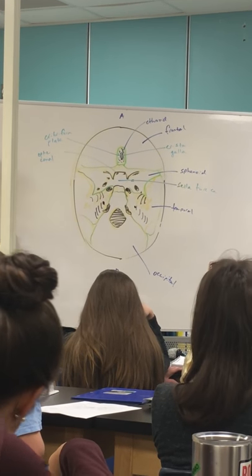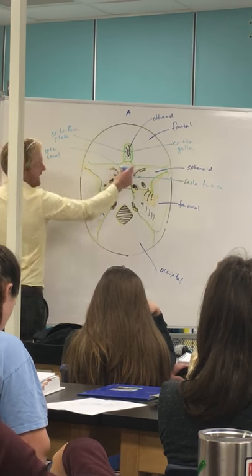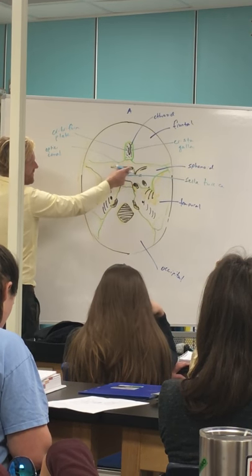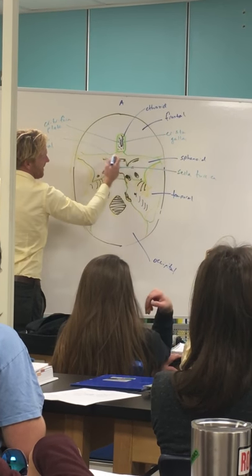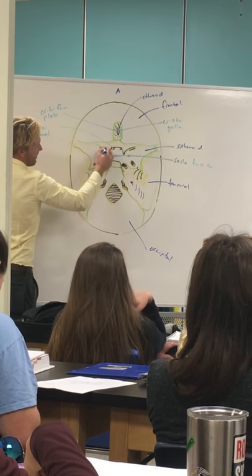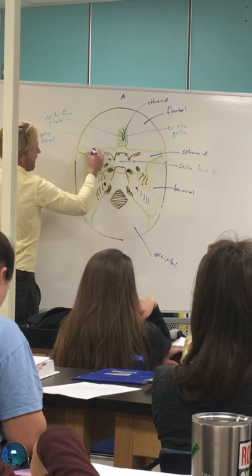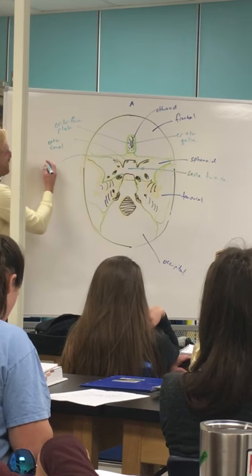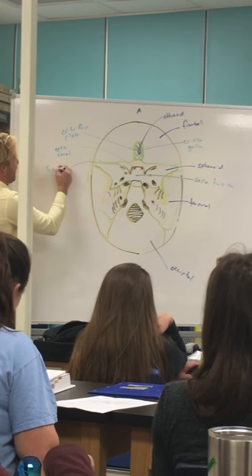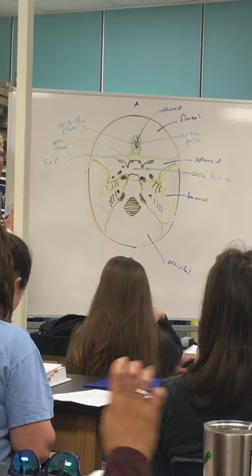Remember the superior orbital fissure? It actually hangs out just underneath this protrusion of bone that kind of comes out. So that superior orbital fissure is right underneath there. You can kind of see that if you have the skull. It's right underneath there. That's the superior orbital fissure, abbreviated SOF.